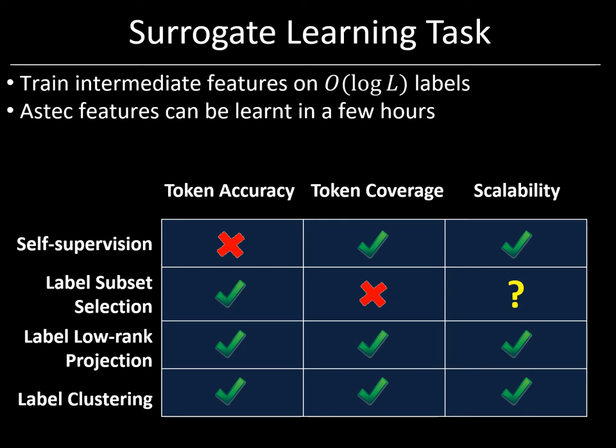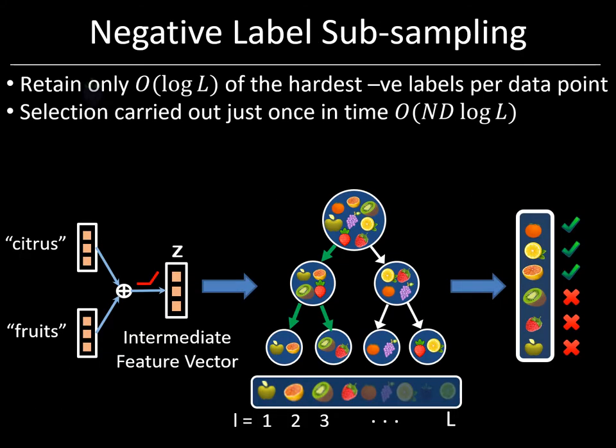Of course, DeepXML is a general framework and therefore other choices of the surrogate task based on self-supervision, label subset selection, or label low-rank projection are also possible and might be more suitable in other applications. Once the intermediate features Z have been learnt, they are frozen and fed into Module 2. In Module 2, we leverage the observation that each training point has been annotated with only a logarithmic number of positive labels, and that the vast majority of its negative labels can be safely ignored as they never contribute to the loss function for that point.